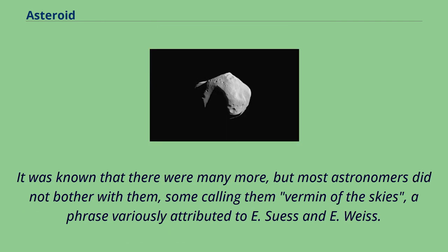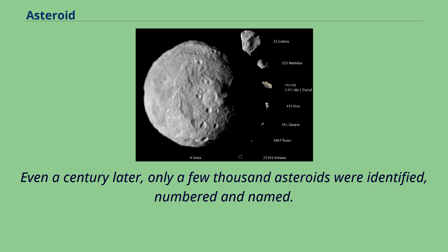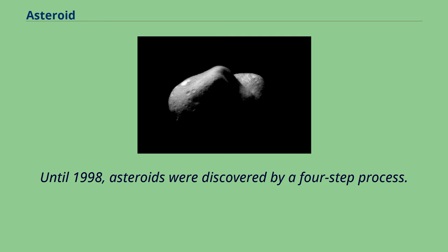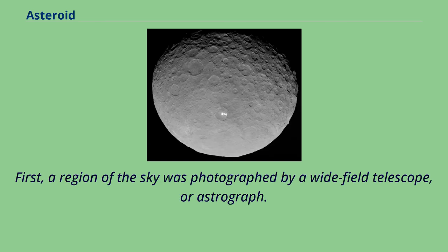It was known that there were many more, but most astronomers did not bother with them, some calling them 'vermin of the skies,' a phrase variously attributed to E. Swiss and E. Weiss. Even a century later, only a few thousand asteroids were identified, numbered and named. Until 1998, asteroids were discovered by a four-step process: first, a region of the sky was photographed by a wide-field telescope or astrograph.